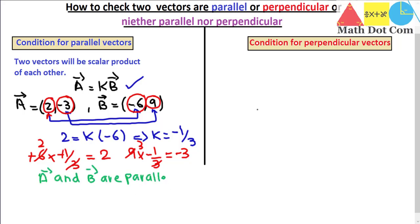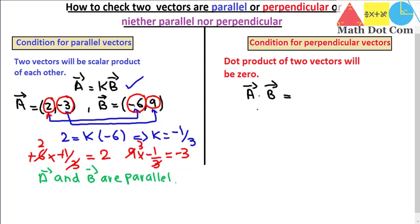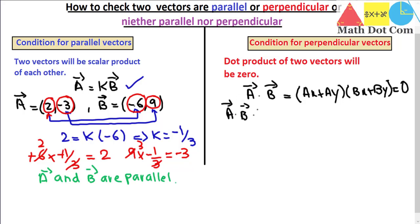Now let's check the condition for perpendicular vectors. The condition is that the dot product of the two vectors equals zero. Mathematically, a · b equals zero, meaning ax·bx plus ay·by equals zero. Geometrically, this is also clear from the formula a · b equals |a||b|cos θ — when θ equals 90°, cos 90° equals zero, so the whole product is zero.